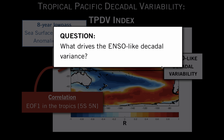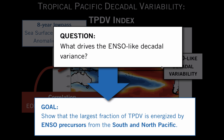The question I'd like to address today is what drives the ENSO-like decadal variance. The goal of this presentation is to show that the largest fraction of the tropical Pacific decadal variability is energized by ENSO precursors from both the south and north Pacific.